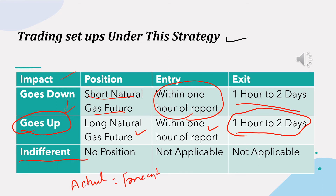The US is one of the major consumers of natural gas in the world, so this data has significant price importance. This report also influences the Canadian dollar price, since energy is one of Canada's primary export products. The Loonie — meaning the Canadian dollar — and oil prices are positively correlated.